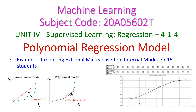In this machine learning class, we will see the polynomial regression model from the 4th unit, supervised learning. We will see the definition of polynomial regression, the need for this model, and one example: predicting external marks based on internal marks for 15 students.